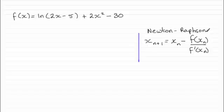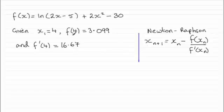So to save us time we're lucky that they give us the initial value which is x₁ which is 4, and they give us the values for f of 4 and f dash of 4. Just jot them down again here: f of 4 then is 3.099 and f dash 4, that's the first differential of f of x when we substitute x equals 4 in, is 16.67.